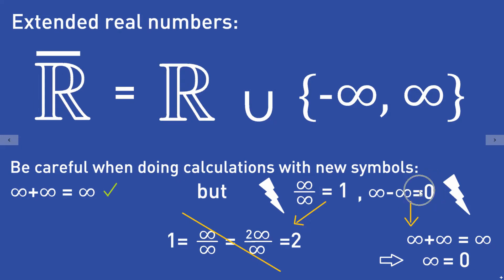The expression infinity minus infinity is also not a very good idea. Because we already have that infinity plus infinity should be infinity. If infinity minus infinity were 0, we could subtract infinity from both sides and would get that infinity is equal to 0, which we don't want. So this is also not a very good idea.